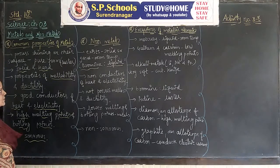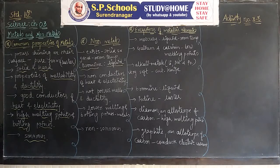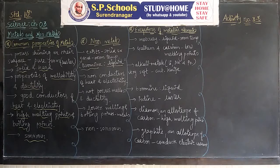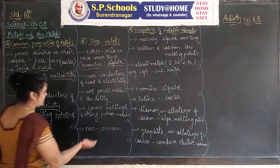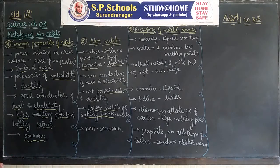Non-metals are non-conductors of heat and electricity. Non-metals do not possess malleability and ductility. Compared to metals, non-metals have lower melting and boiling points, and they are non-sonorous. These points are important for the study of the entire chapter.